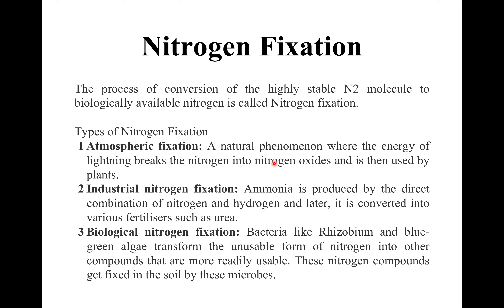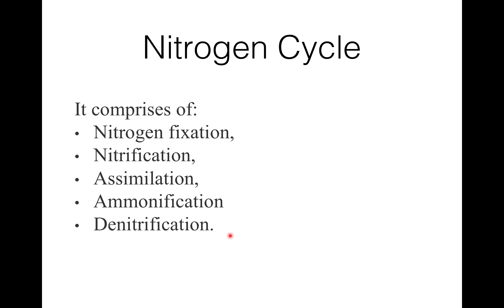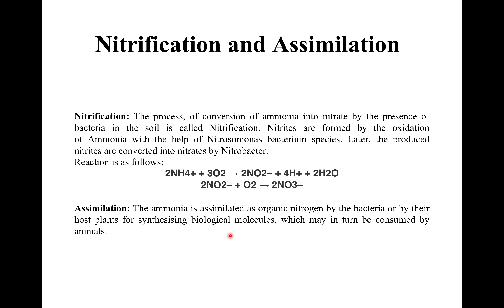In industrial nitrogen fixation, ammonia is produced by the direct combination of nitrogen and hydrogen, and is later converted into various fertilizers such as urea. The third type is biological nitrogen fixation, in which bacteria like Rhizobium and blue-green algae transform the unusable form of nitrogen into compounds that are more readily usable, and these nitrogen compounds get fixed in the soil by these microbes.